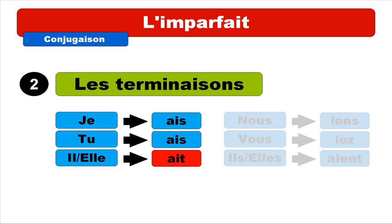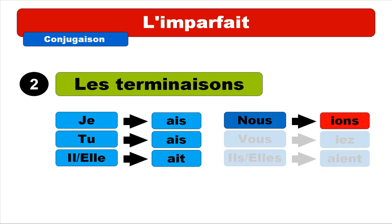The third ending — for 'il/elle' — is '-ait'. Instead of the 's' you get a 't', but it has the same pronunciation: 'è', because phonetically the 't' is silent. For 'nous', the ending is '-ions', and keep in mind that this first 'i' is pronounced like 'y' — so you get 'yon'. For 'vous', you get the same 'y' sound at the beginning — and remember that '-ez' gives you the sound 'é' — so you get 'yié'.